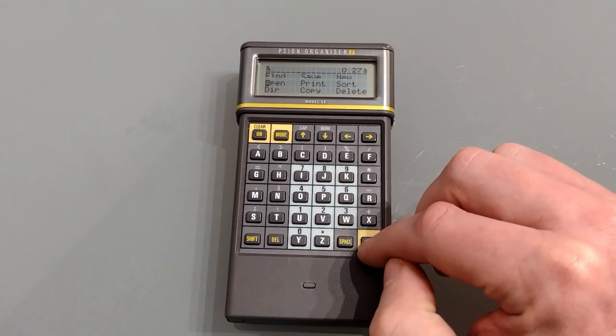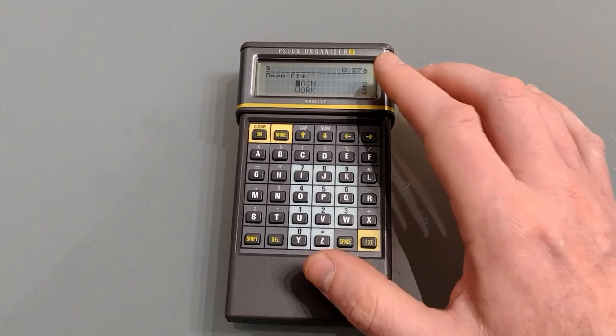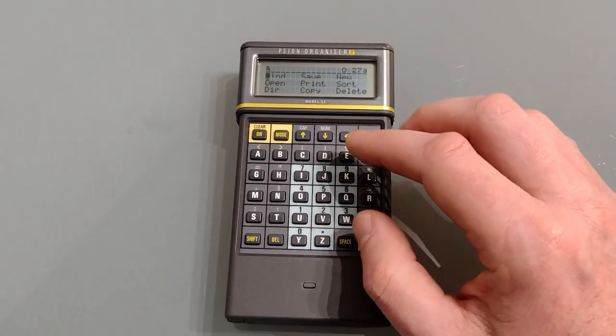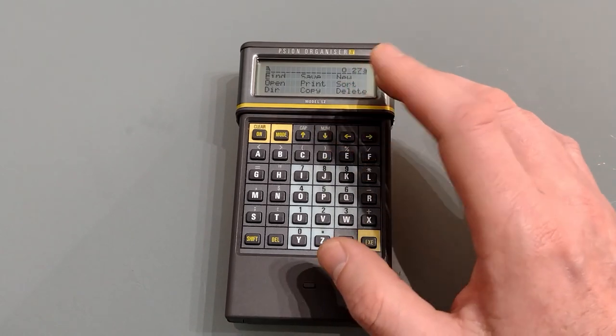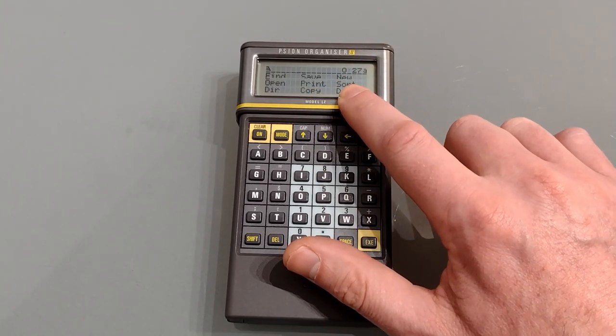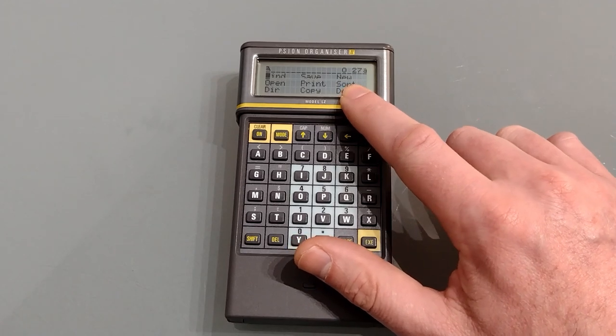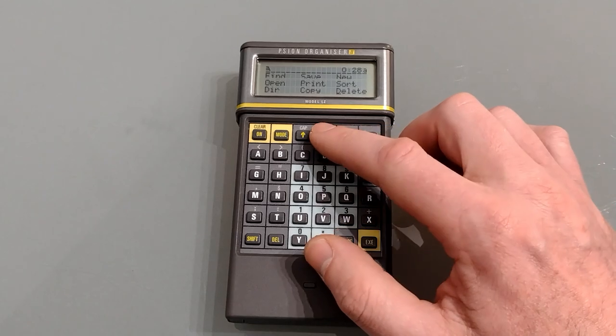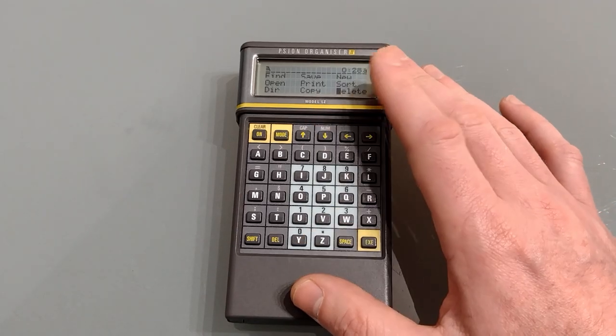You can choose to open a different file by going to open. Hitting execute will show you them and then select them with the arrows and press execute again to open a different file. You can also print a file and we now have a sort function. This alphabetizes all the files. Copy allows you to copy the file to one of the data packs. Delete allows you to erase a file and that's all the options here.